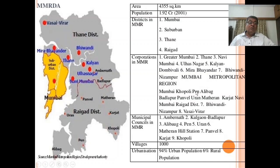Towns in the metropolitan region include Mumbai, Cupoli, Pen, Alibag, Badlapur, Panvel, Uran, Matheran, Karjat, Navi Mumbai, Raigad district, Poinadi, Nizampur, and Vasai-Virar. Municipal Councils in MMR: Ambarnath, Kulaba, Badlapur, Halipada, Pen, Uran, Matheran Hill Station, Panvel, Karjat, and Khopoli. There are about 1,000 villages under MMRDA, with 94% urban population and 6% rural population.